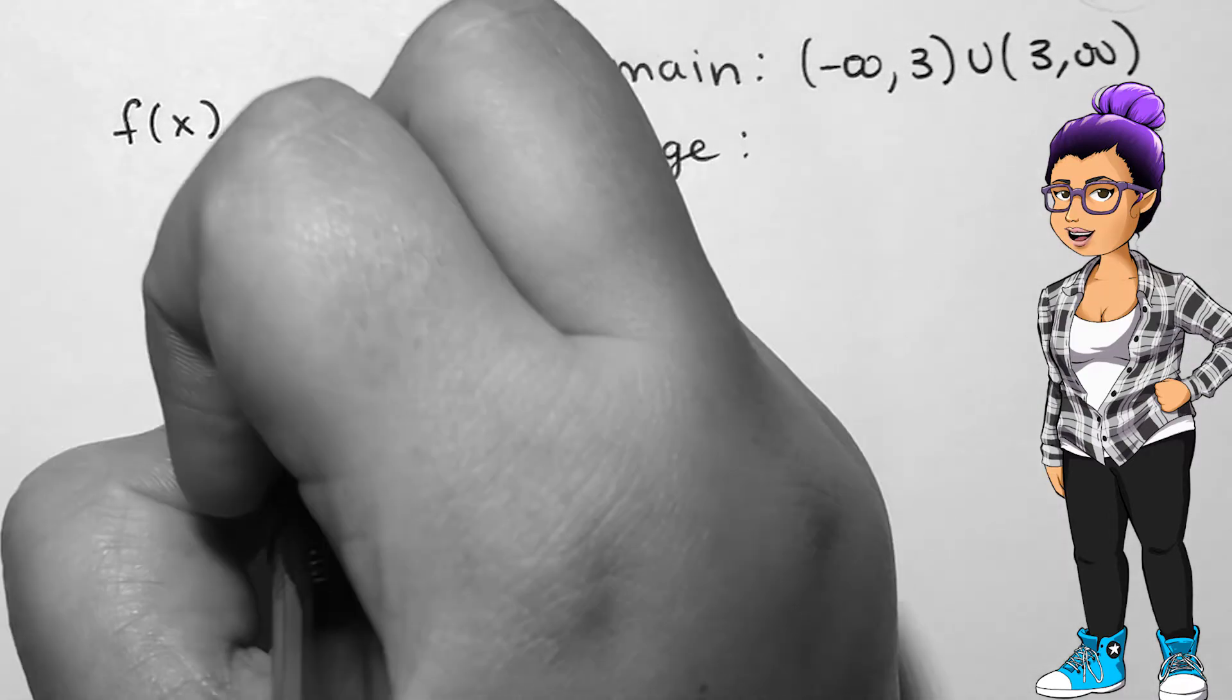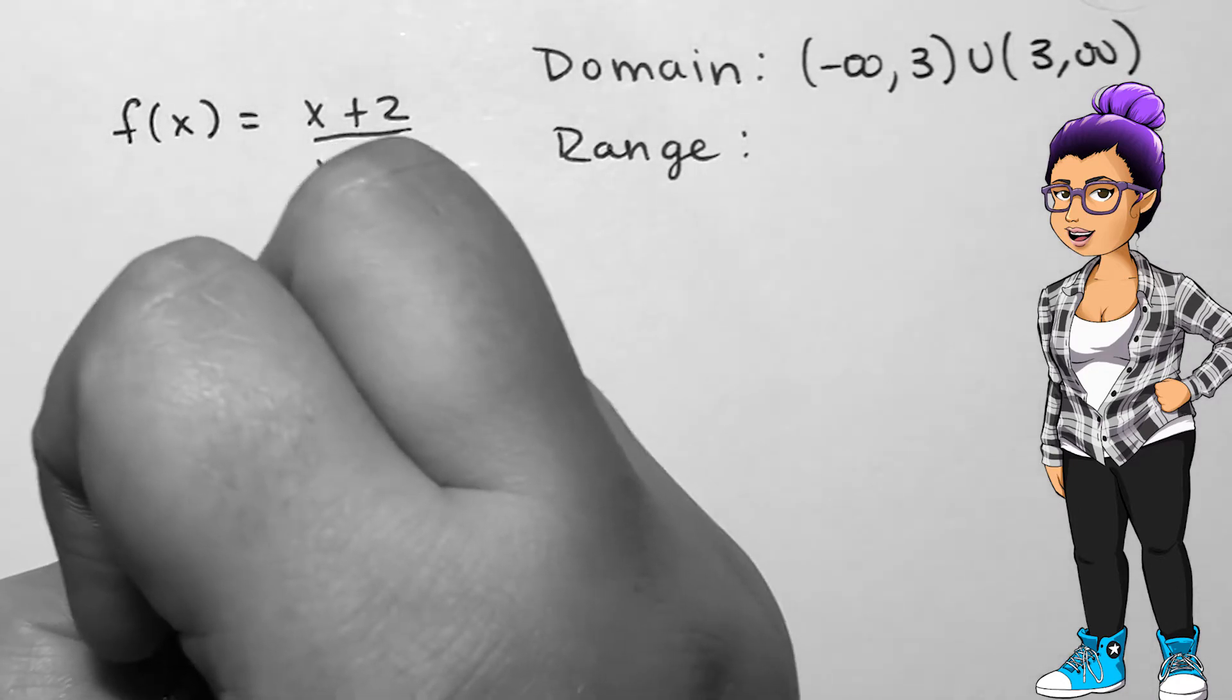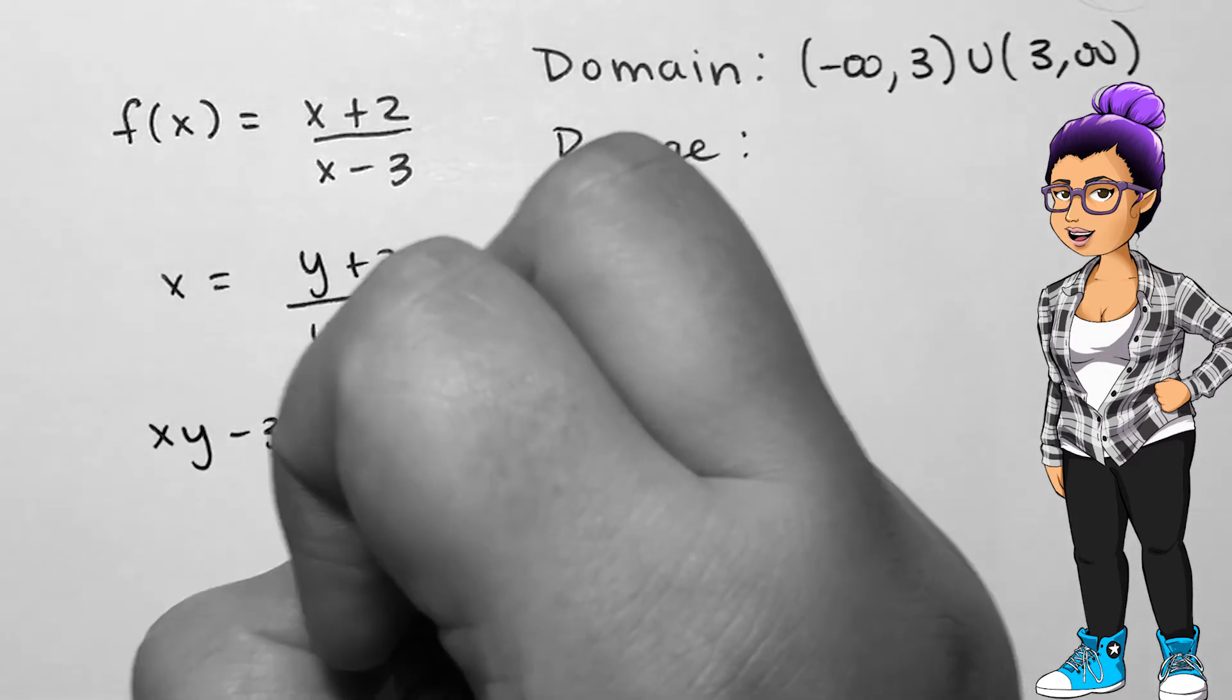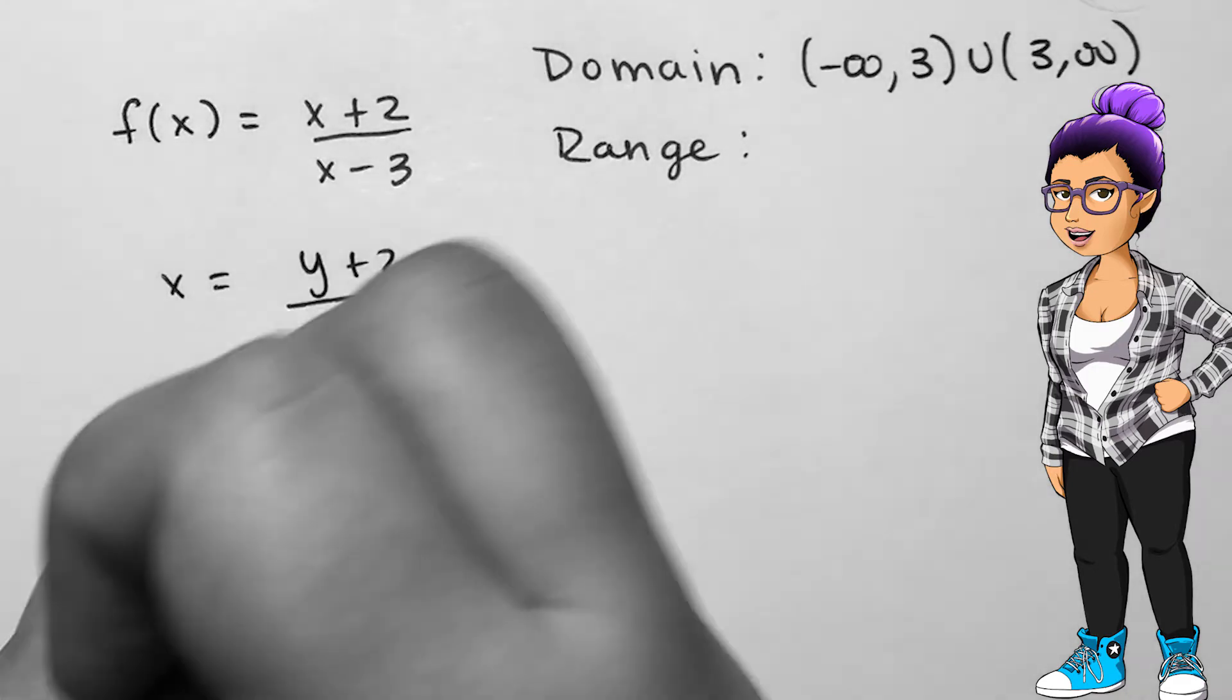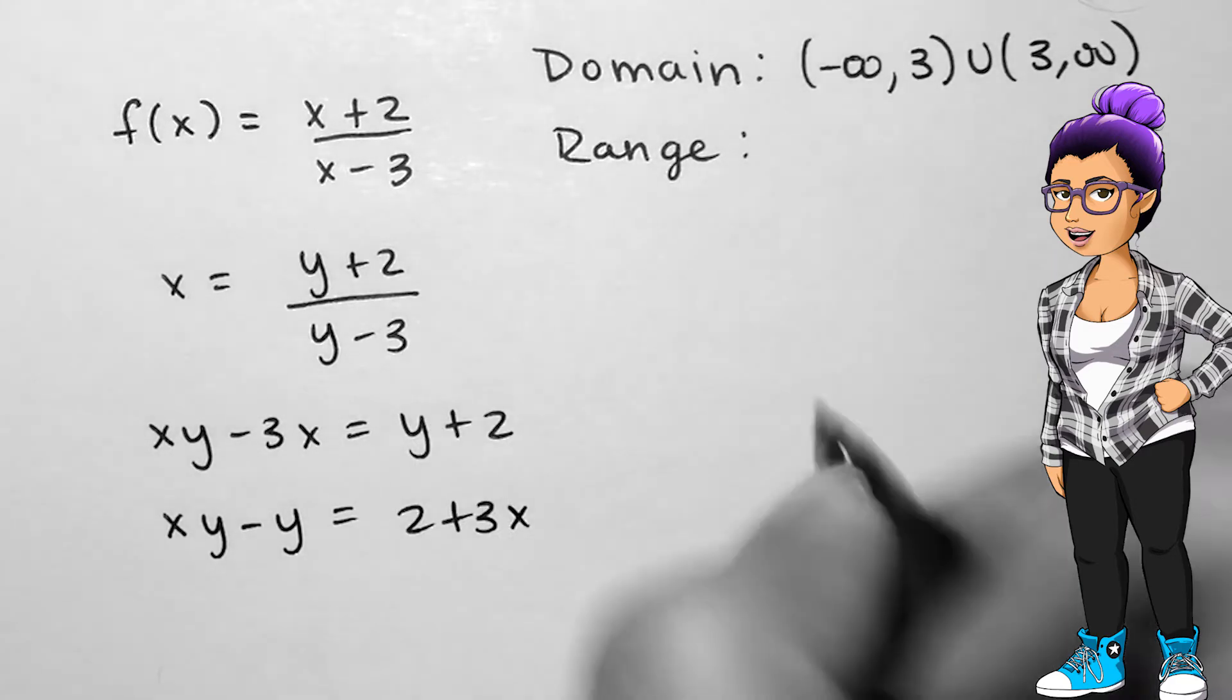I cannot quickly see the range given the information we have so far. Since an inverse function switches the inputs and outputs from the original function, the domain of f inverse of x will be the range of f of x. I now need to find the inverse function of f of x.